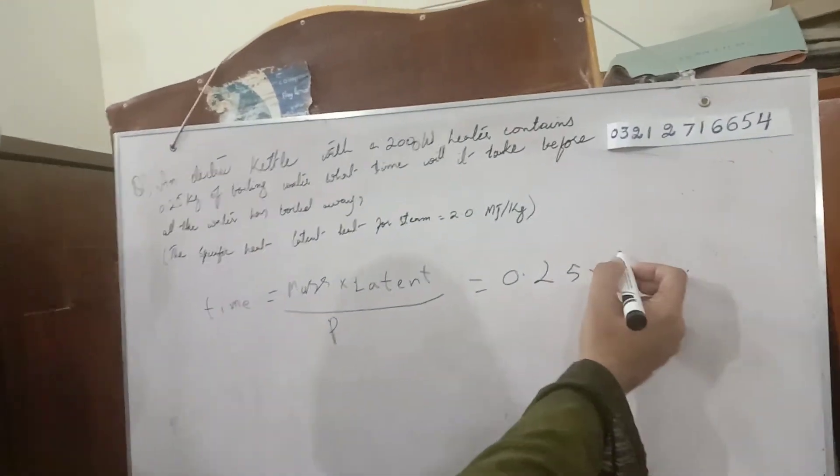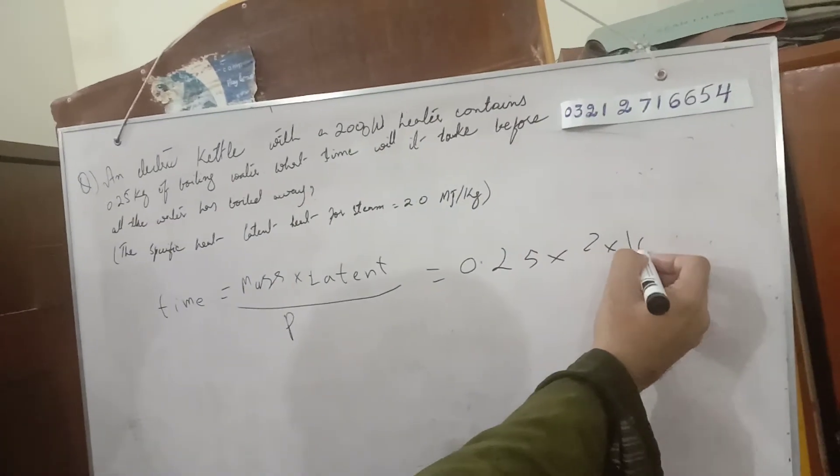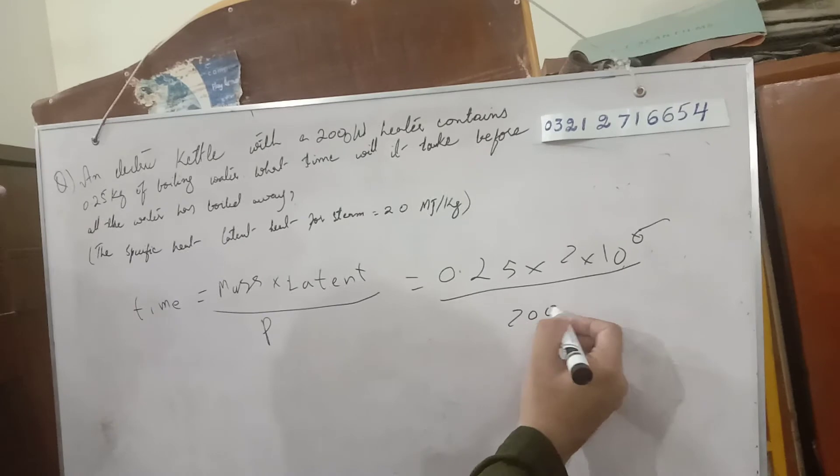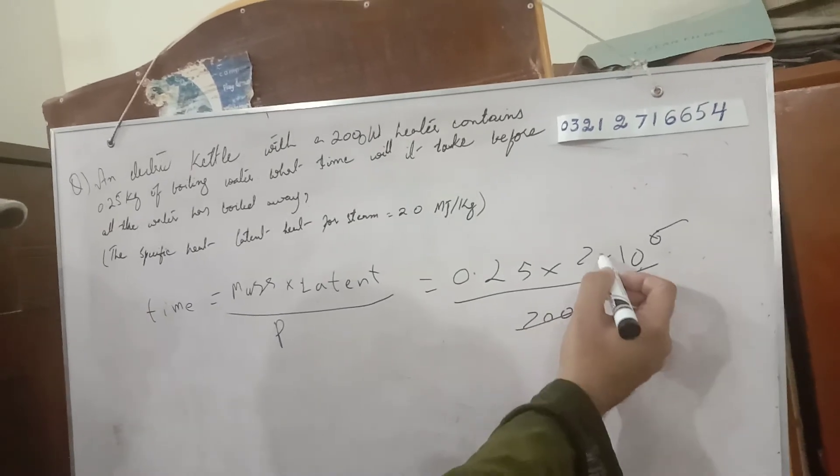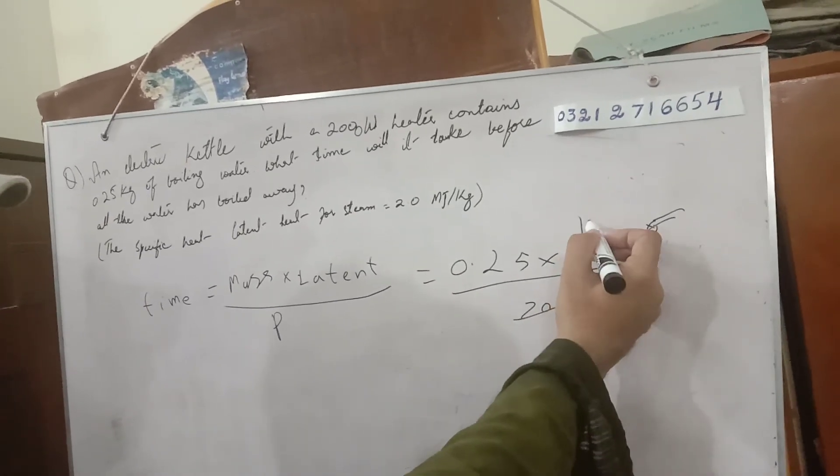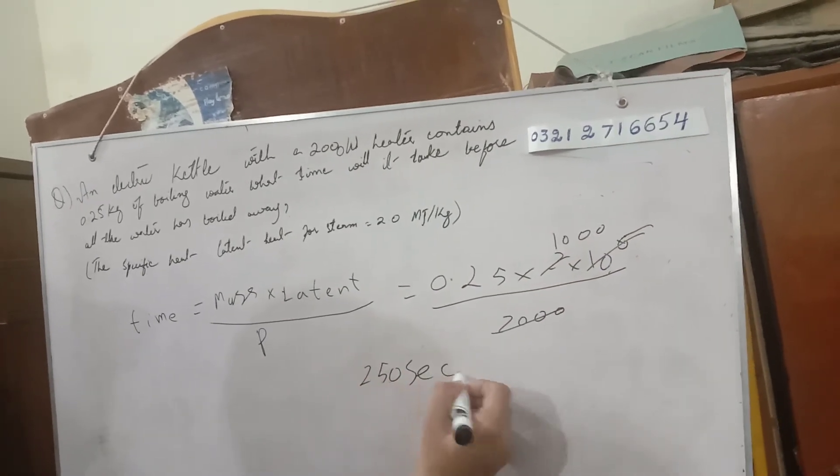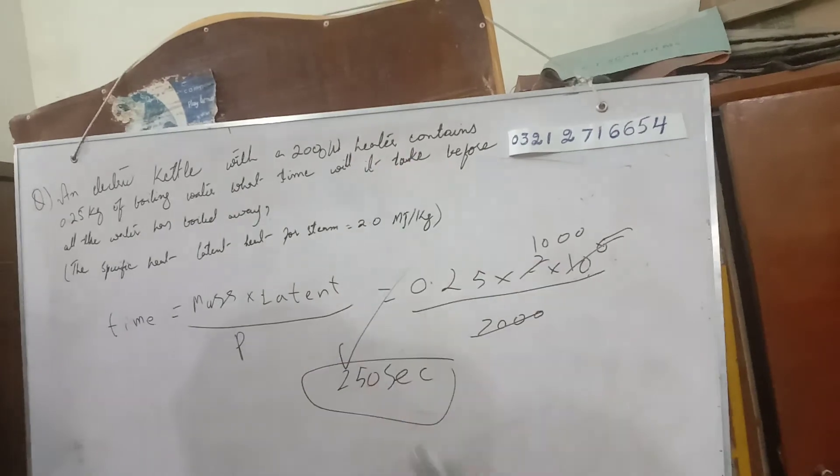Time equals 0.25 multiplied by 2 times 10 to the power 6, divided by 2,000. So 2 times 10 to the power 3, and 1,000 is left. 0.25 multiplied by 2,000.